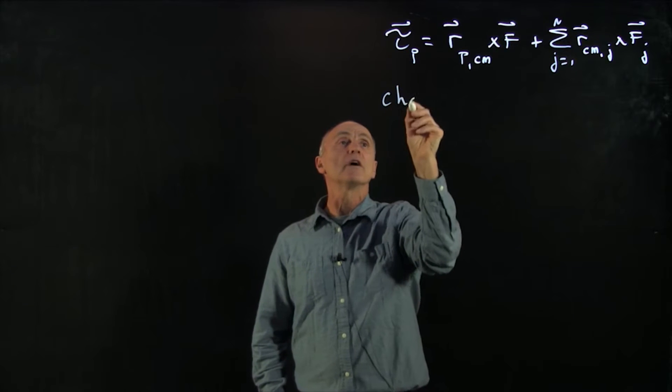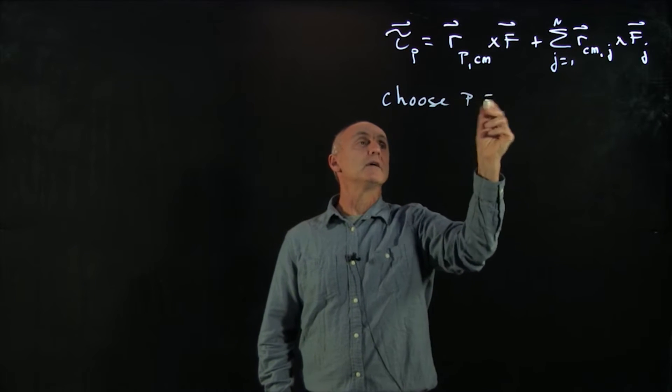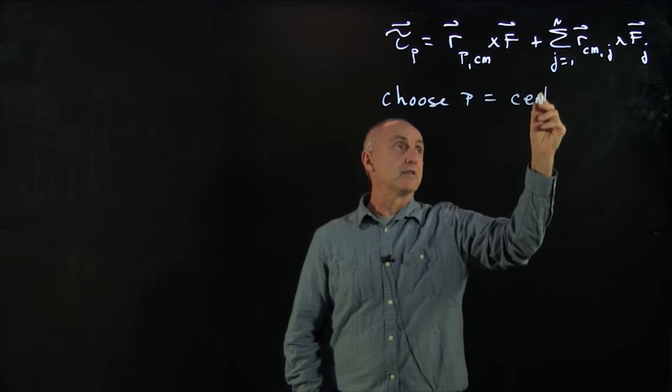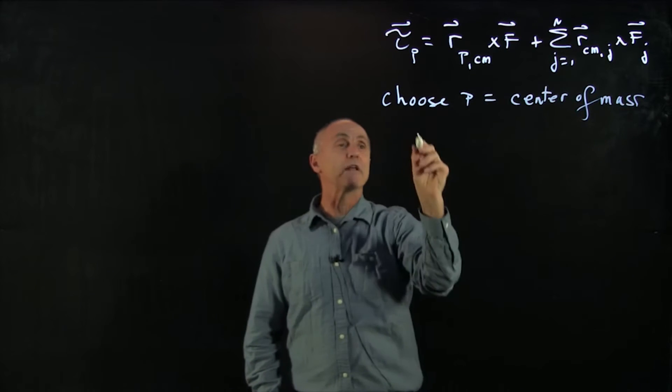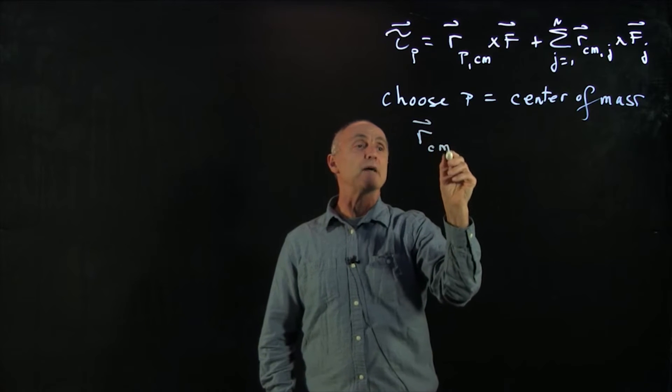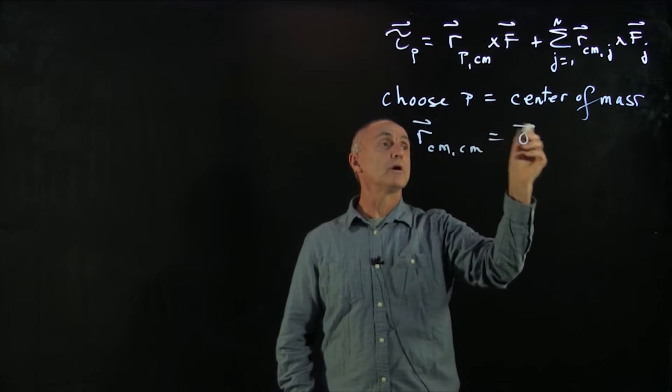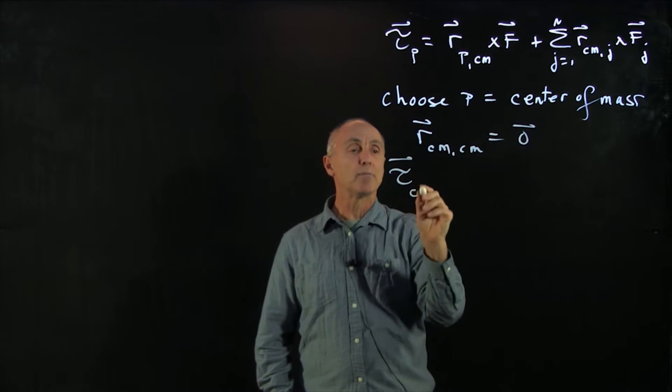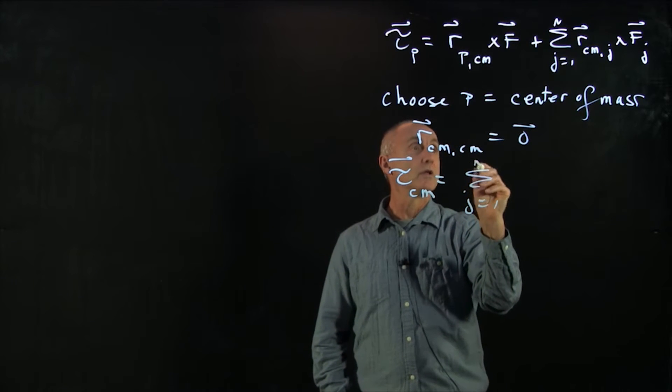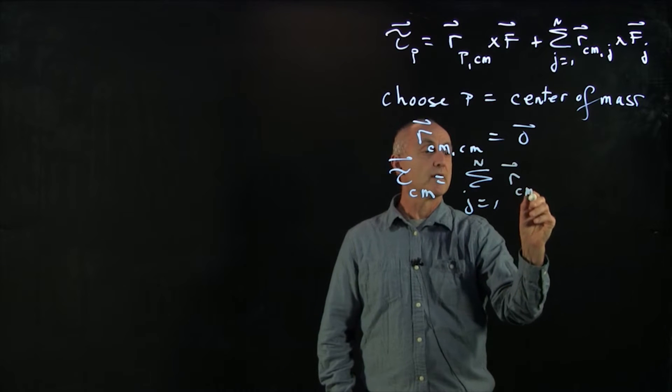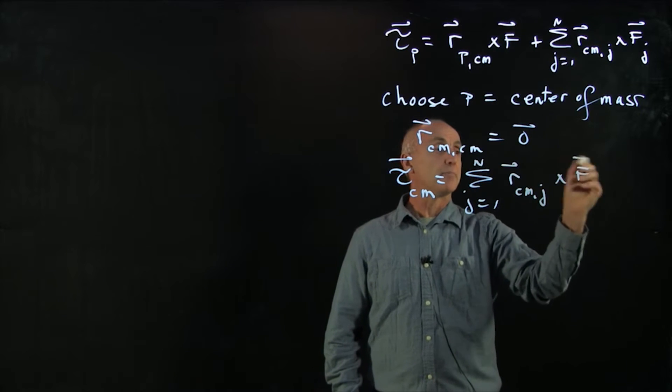Now, if we choose the point p to equal the center of mass, then we know that the vector r center of mass to the center of mass is 0. So the torque about the center of mass is just equal to the forces about that point.